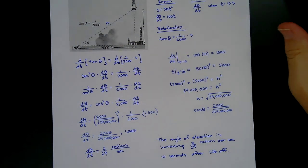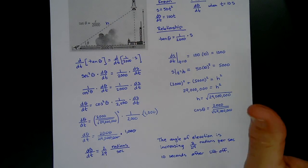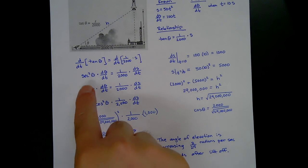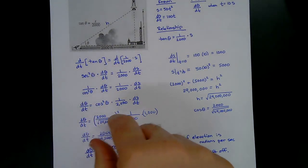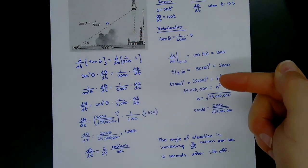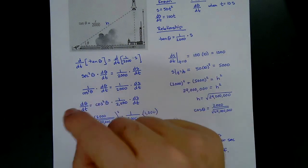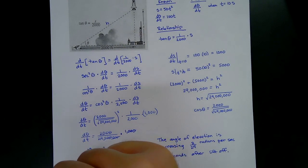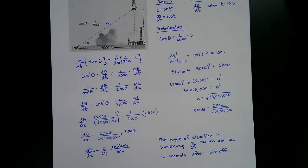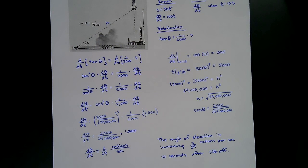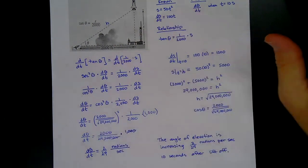When using trig-based related rates, you take the derivative of a trig function and pick up a term like sec²θ. Because you're working with a right triangle, you can use the Pythagorean theorem to find the cosine ratio without ever needing to find the actual angle. Trig functions are ratios of sides, and you'll usually be given enough length information to compute what you need.